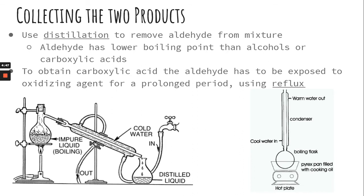You can collect these two different products separately. To collect the aldehyde from a primary alcohol, you heat the solution at a low temperature. The aldehyde boils first because it has a lower boiling point. As it turns to gas, it flows down the tube through the condenser — which is a tube surrounded by cold water — and condenses back into a liquid that you can collect. By boiling at a low temperature, you stop the reaction before it forms carboxylic acid.